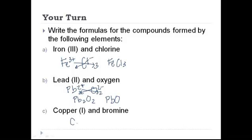And finally Copper 1 is Cu plus. And bromine is Br minus. Super easy one. CuBr.